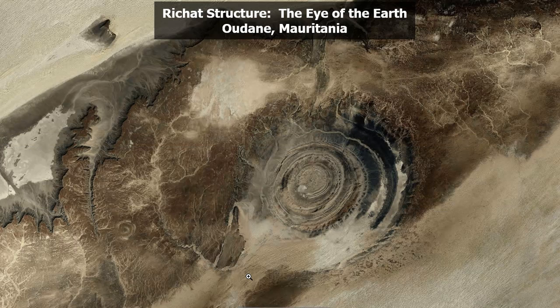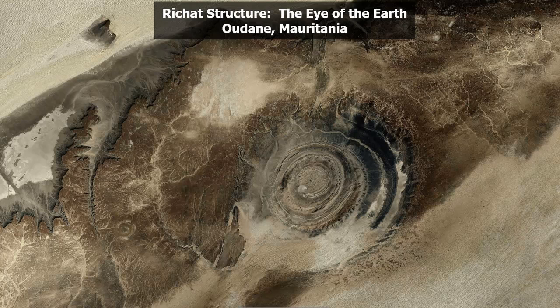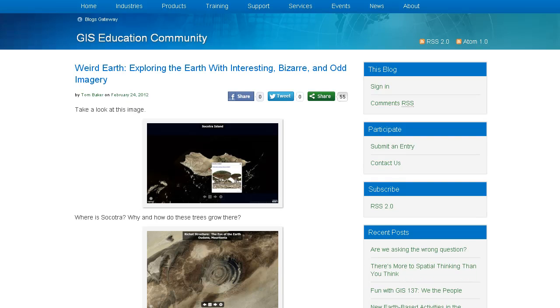Let's take a look at this one — the Rishat Structure, the Eye of the Earth in Mauritania. Why does this look so bizarre? Fascinating. Where is that structure, and why are its origins still a bit mysterious?